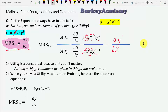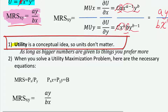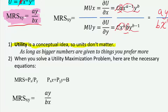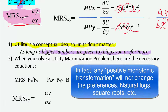Here are a couple of things you have to understand. Number one, utility is just a concept — it isn't a real thing that exists in the real world. Utility is a modeling tool. The number we use to represent utility doesn't matter; the only thing that matters is that bigger numbers are assigned to things that people prefer more. The actual number we get for utility doesn't matter, and think back to that constant — we can take utility and multiply it by any number without changing the underlying preferences represented.